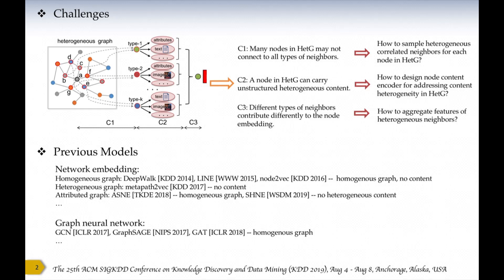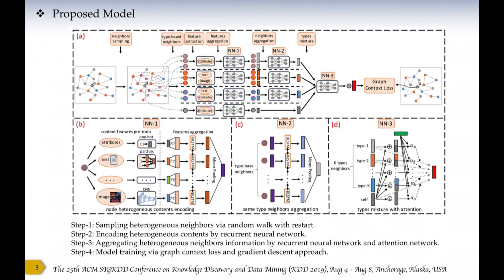There are two kinds of previous models for learning node embeddings: network embedding models and graph neural network models. However, few of them can jointly consider heterogeneous structure information as well as heterogeneous content information of each node. In this work, we propose a heterogeneous graph neural network model to solve these challenges. This model jointly considers node heterogeneous content encoding, type-based neighbor aggregation, and heterogeneous type combination. A graph context loss and minibatch gradient descent procedure were employed to learn the model parameters.